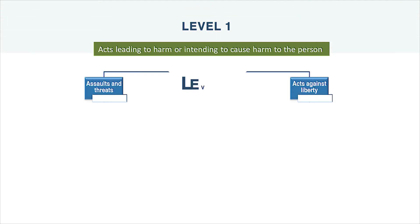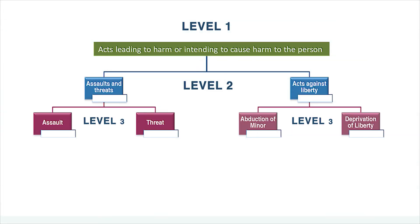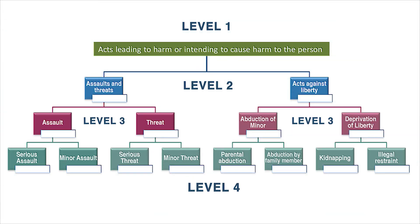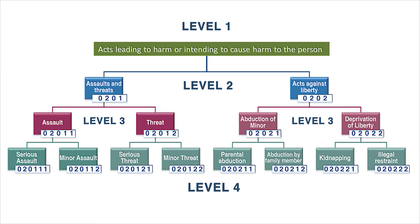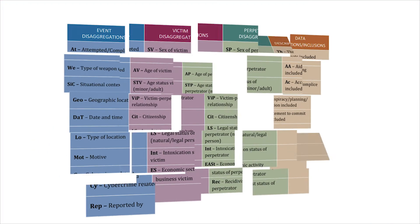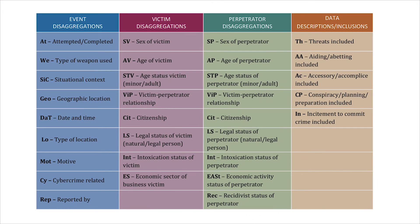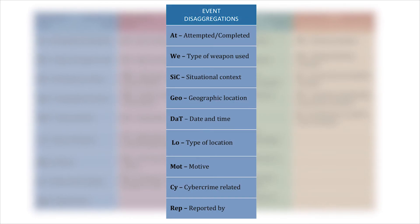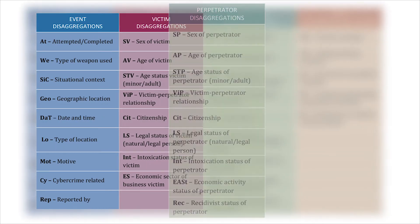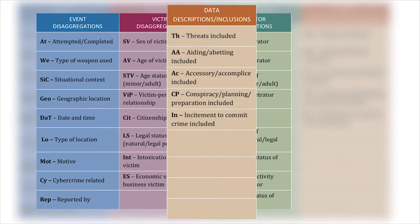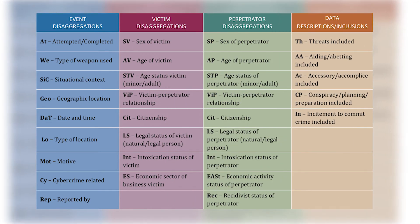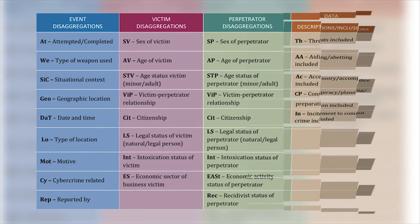Next, the offenses are further categorized into level two, level three and level four categories where possible. Thirdly, each offense is given a numerical code. Finally, the ICCS provides a list of tags which describe characteristics about the criminal event, victims, offenders and other useful information. These tags make it easier to understand the complexities surrounding individual offenses.